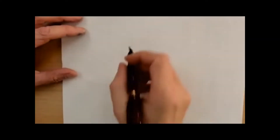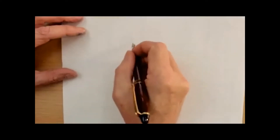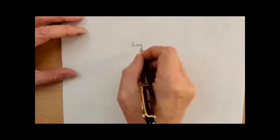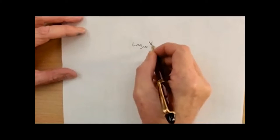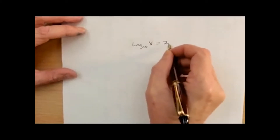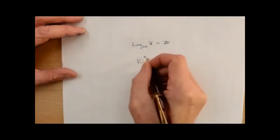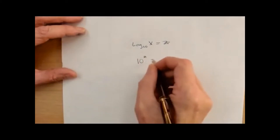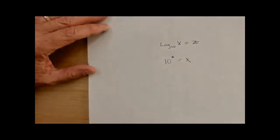Let's go over the rules of logarithms again. First of all, if log base 10 of x equals z, that means that if you raise 10 to the power of z, you get x. A lot of people understand this, so let's bring it to the next level.